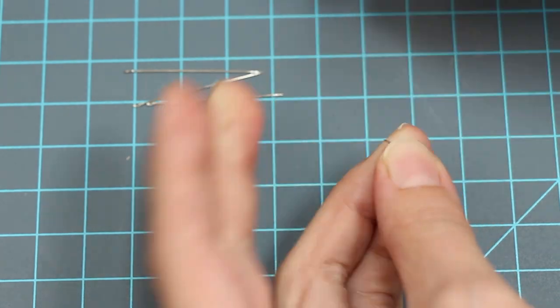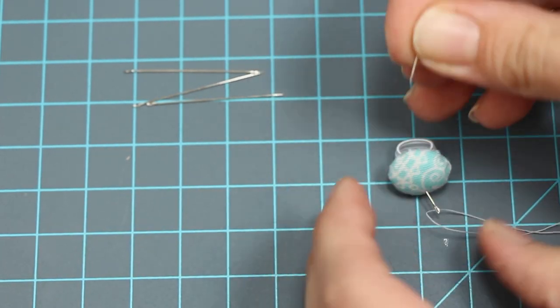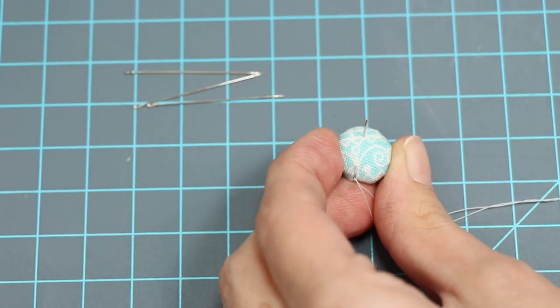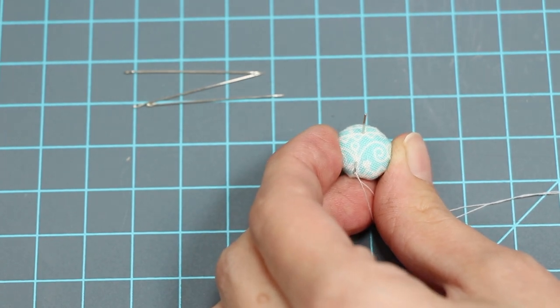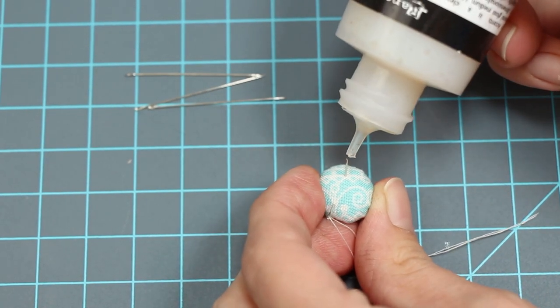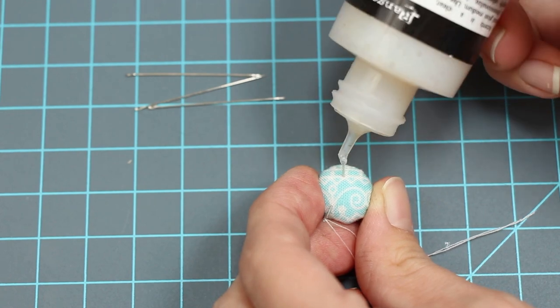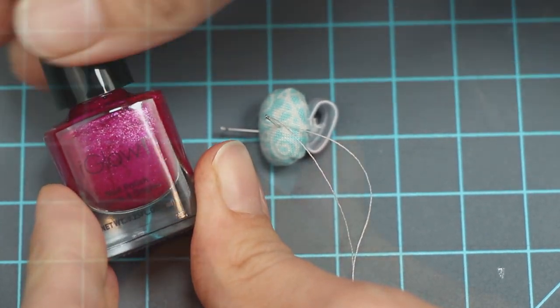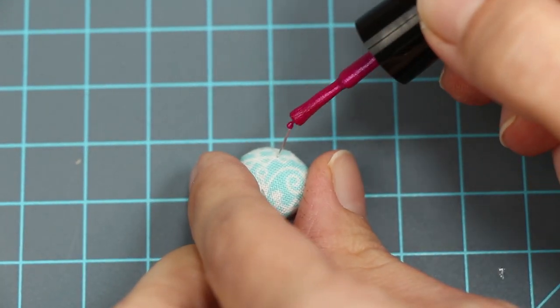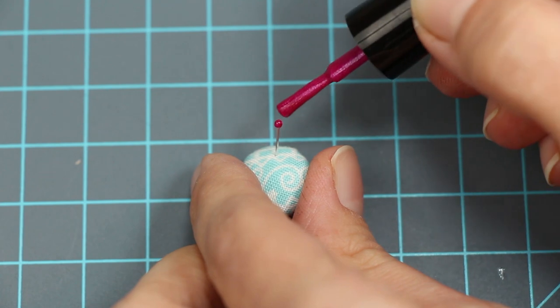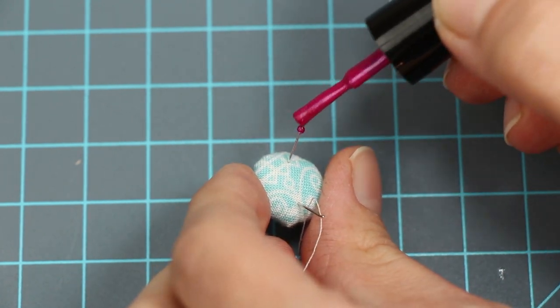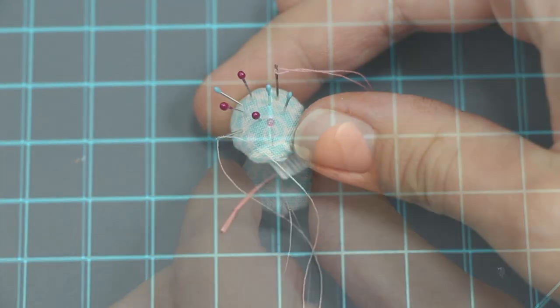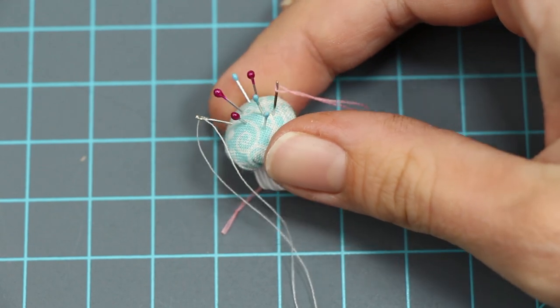To make pins, cut off the sharp ends of pins or needles. Stick it in your pin cushion and add a drop of glue to the end. Let it dry completely, then I use nail polish to color the end a fun color. Make more to fill up your pin cushion.